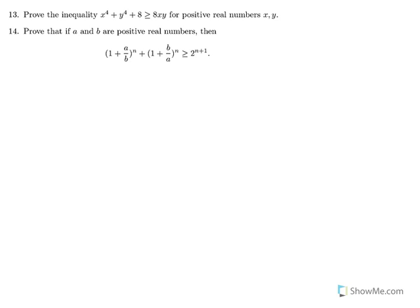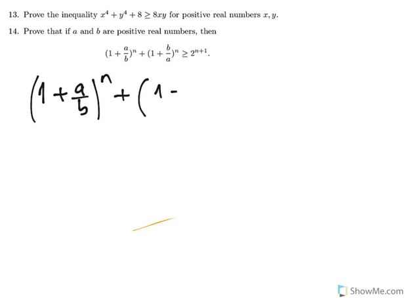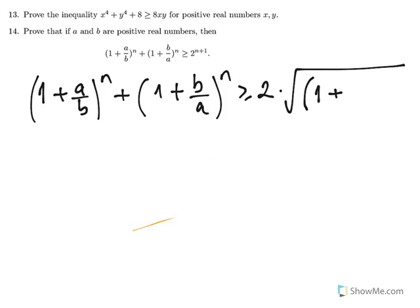If we apply the AM-GM inequality to the left-hand side, that is (1 + a/b)^n + (1 + b/a)^n is greater than or equal to 2 times the square root of their product. Since the powers are the same, I can write this as (1 + a/b)(b/a), which is also 1 plus (a/b + b/a) to the power of n.